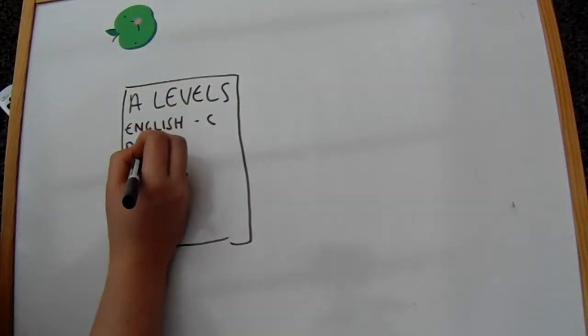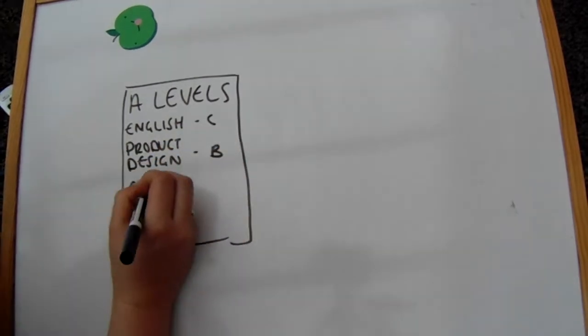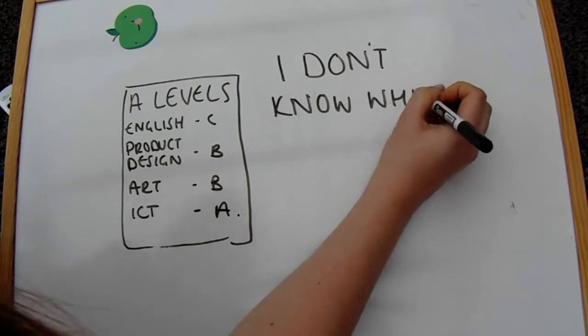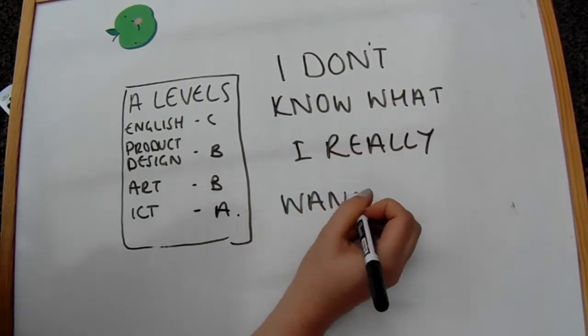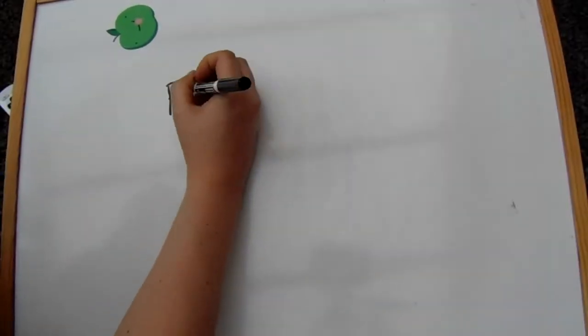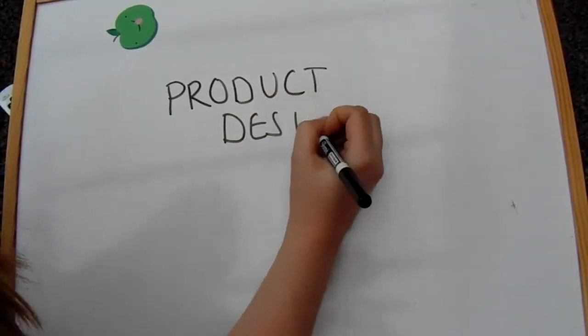So I got my A level results through. I actually did really well but I just really didn't know what I wanted to do after I'd finished 6th form so I ended up staying on for an extra year just trying to improve my grades and applying for university and I decided that I actually wanted to apply to do product design.